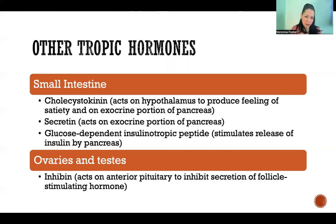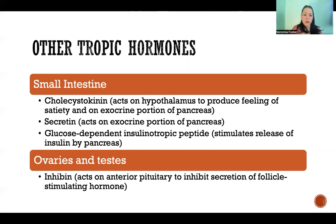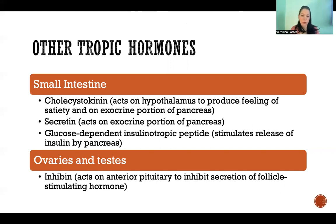Starting with the small intestine — it secretes three hormones that would be considered tropic hormones. First is cholecystokinin, a hormone secreted by the small intestine. It acts on the hypothalamus to produce a feeling of satiety, so fullness or satisfaction.